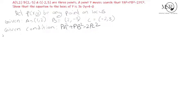We will calculate the distances PA², PB², and PC² using the distance formula: square root of (x2 - x1)² + (y2 - y1)². We can cancel the square root since both sides are squared.